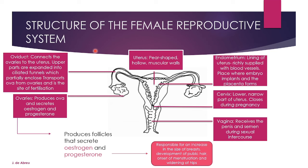Then we get to the structure of the female reproductive system. The ovaries produce ova and secrete estrogen and progesterone, which are the female sex hormones — making the ovaries the female sex organ. The oviducts, or fallopian tubes, connect the ovaries to the uterus. The upper parts are expanded into ciliated funnels that partially enclose the ovaries, and they transport ova from the ovaries to the uterus.